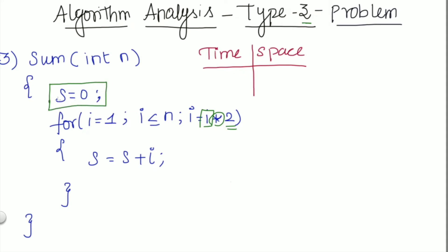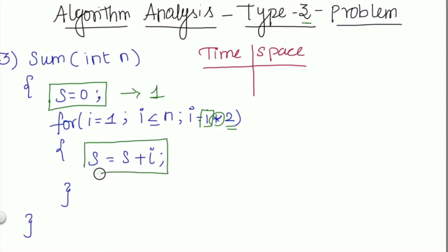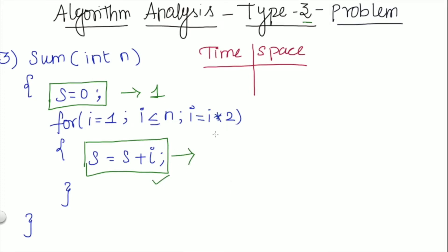Now, this declaration statement will be executed only once, so it will take one unit of time. Since this next statement is present inside the loop, we have to check how many times it will be executed.